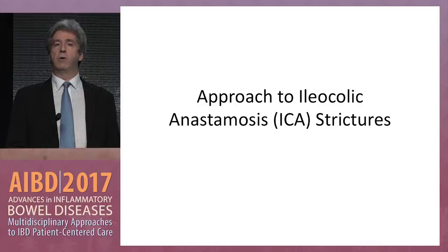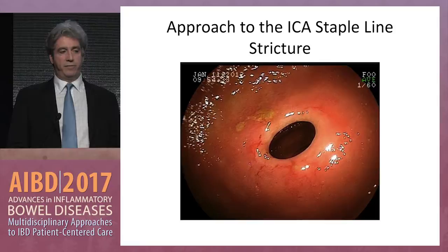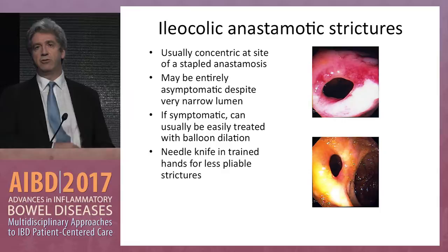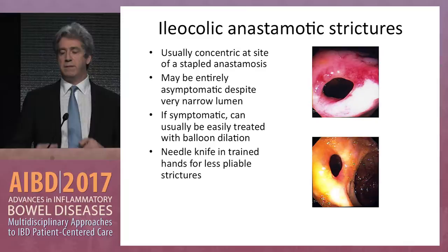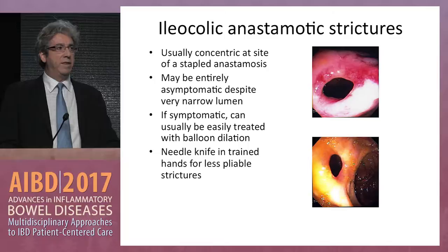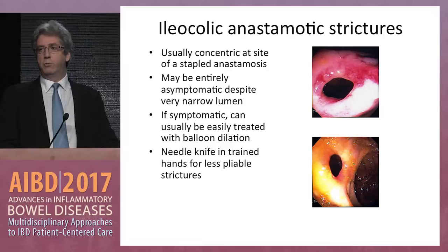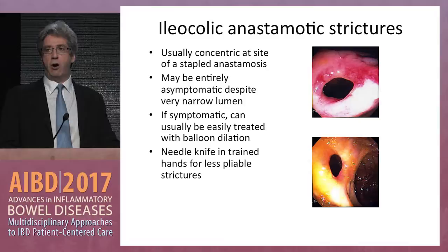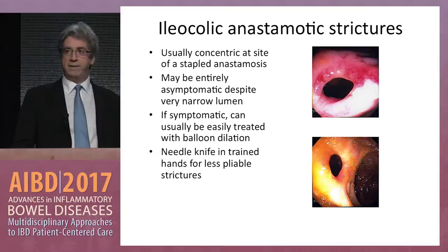At this point everyone is very comfortable and familiar with ileocolic anastomotic strictures. This is the most common stricture by far we see in the small bowel. Often they're right at the staple line — a beautifully concentric stricture. They are usually not that symptomatic until they narrow down substantially. If they are symptomatic, we are comfortable — as we learn even during fellowship — at dilating these with balloons. Twelve to fifteen millimeters is probably far more than enough. Just because the stricture is there, if the patient is entirely asymptomatic, they don't require endoscopic intervention, but they might require medical therapy.